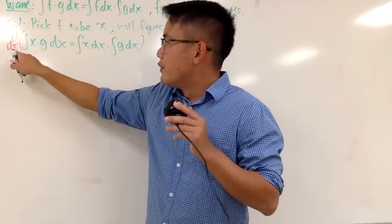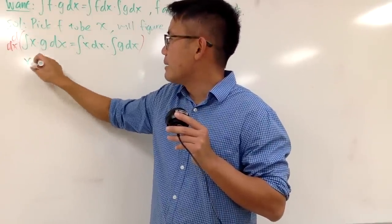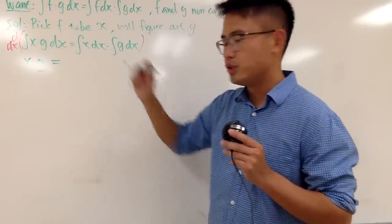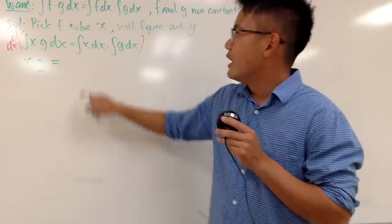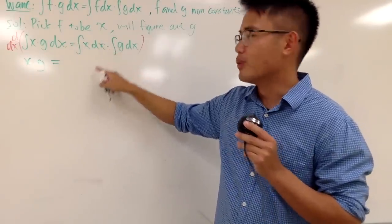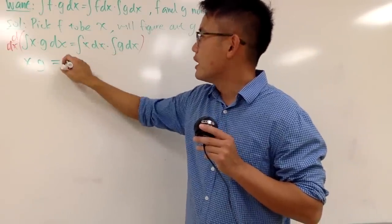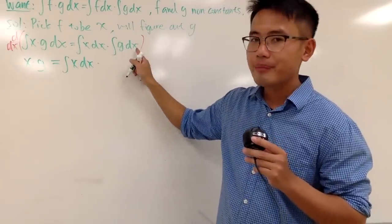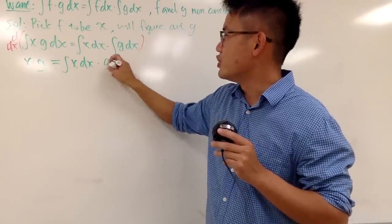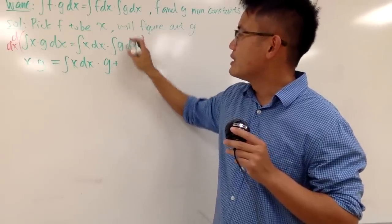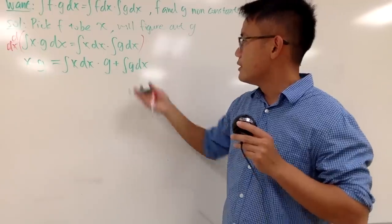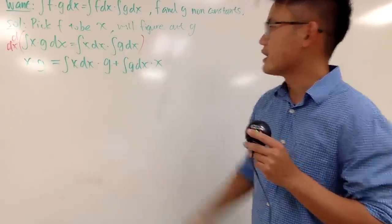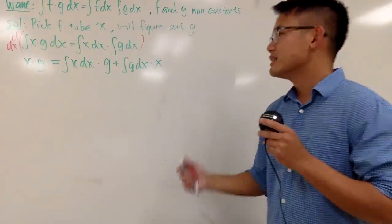Differentiating this integral, we pretty much just get x times g. And on the right-hand side — you don't have to put down the plus c, this is just differentiation — we have to use the product rule. So we keep the first function, the integral of x dx, and multiply by the derivative of the second, which gives just g. Then we add the second function, which is the integral of g dx, multiplied by the derivative of the first, which is just x.